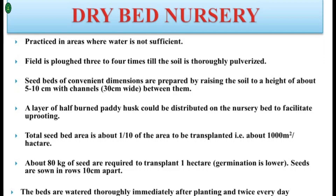Dry bed nursery is used in those areas where sufficient water is not available for wet bed nursery. The field is ploughed 3 to 4 times till the soil is thoroughly pulverized — that is, the soil becomes loose and fragile with a fine tilth. Seed beds of convenient dimensions are then prepared.